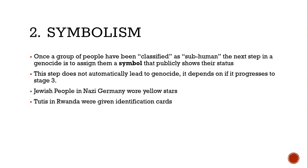The second stage is symbolism. Once a group has been classified as subhuman, the next step is to assign them a symbol that publicly shows their status. This step doesn't automatically lead to genocide — it depends on whether it progresses to stage three. In Germany, Jewish people had to wear yellow stars, and there were different names used — Jew and German — as well as Nazi swastika armbands.